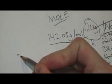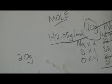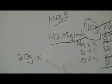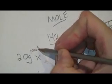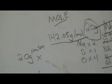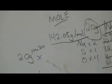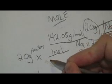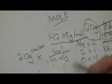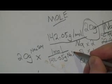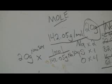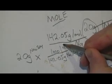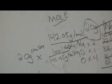You take the number of grams that you've been given. You have 20 grams of this stuff. And if we multiply that by a fraction, if we multiply that by one mole over 142.05 grams of Na2SO4, let me read this out to you.